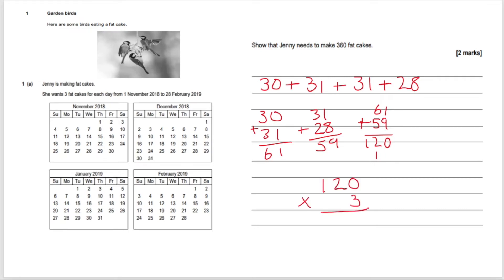So this is where our times tables do come into force here. Three times zero is zero, it's an easy start. Two times three is six. Three times one is three. So our answer is 360 fat cakes.